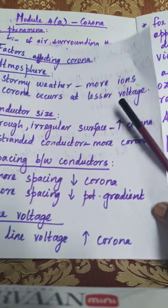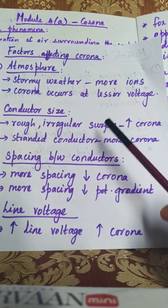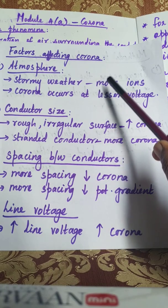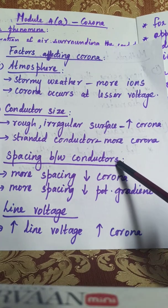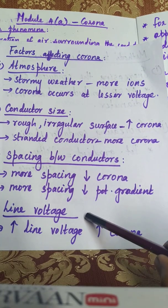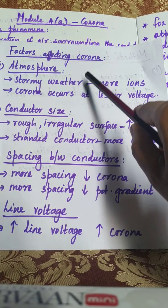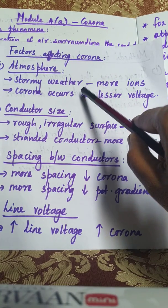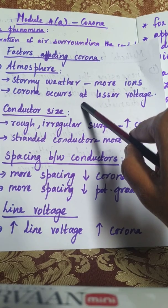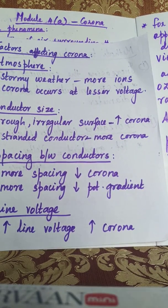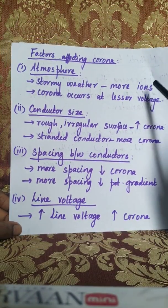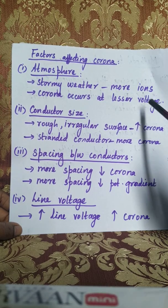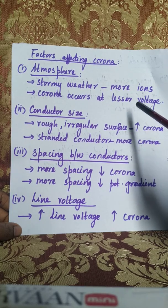Now let us discuss the factors that affect corona. The factors are: atmospheric conditions, conductor size, spacing between conductors, and line voltage. Regarding atmospheric conditions — in stormy weather there will be more ions compared to standard weather, meaning more free electrons already exist, so the avalanche effect happens at a lesser voltage, meaning corona will occur at a lesser voltage.